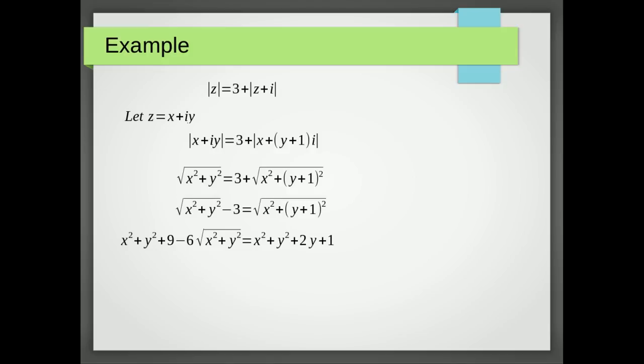And then I've got minus three times the square root of x squared plus y squared twice to give me the minus six times square root of x squared plus y squared. And the next thing I'm going to do is simplify by canceling out the x squareds and the y squareds.